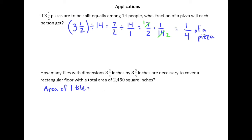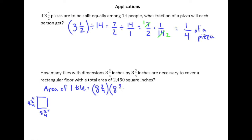The area of one tile is just length times width. What we have here is a square tile, 8¾ inches by 8¾ inches. So we need to multiply these two mixed numbers — 8¾ times itself. We need to turn those into improper fractions: 8 times 4 is 32, plus 3 is 35, so we have 35/4 times 35/4.